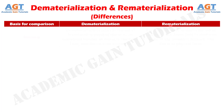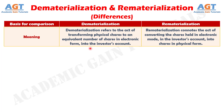Difference number 1: the process of conversion of securities from physical form to an equivalent number of shares in electronic form is known as dematerialization. On the contrary, the process of obtaining physical certificates of the securities held in electronic form is called rematerialization.